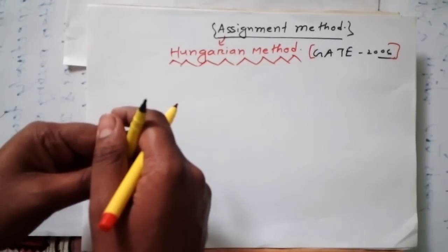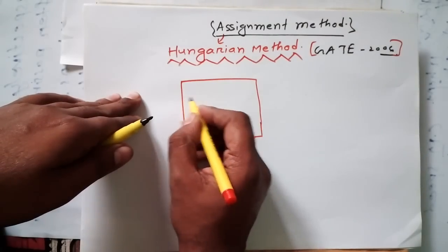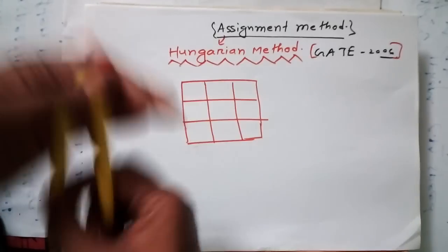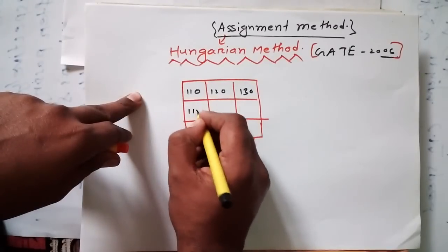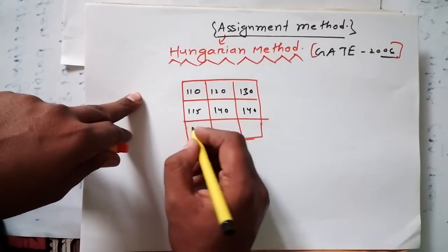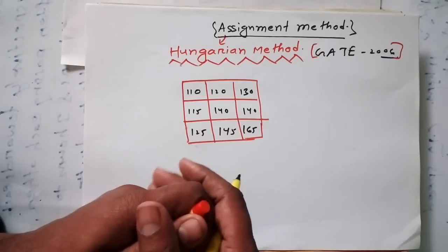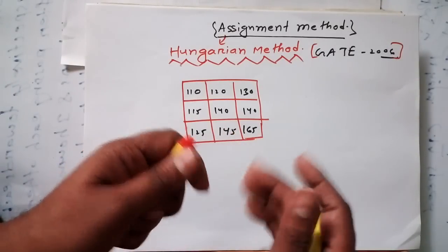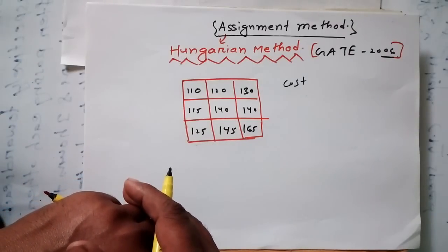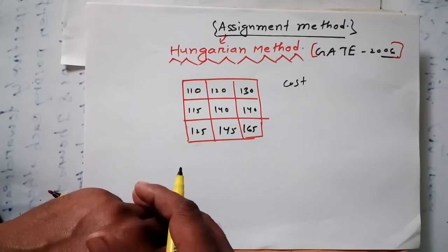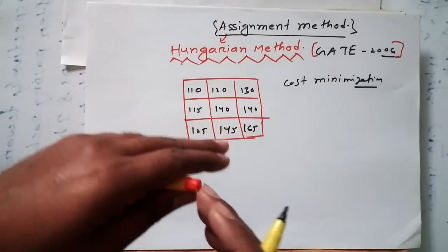Let me draw the question table properly. The values are: 120, 130, 115, 140, 140, 125, 145, 165. This problem is for cost minimization. Remember, the method for maximum cost and minimum cost is slightly different, so this discussion is specifically about cost minimization.